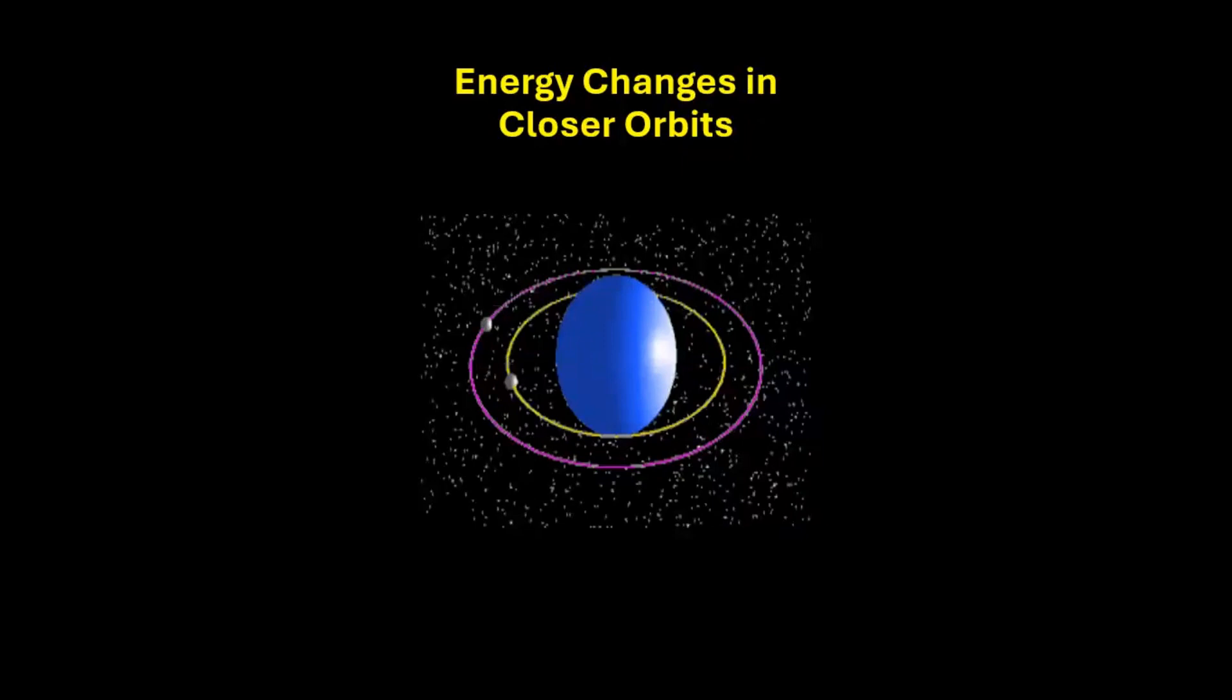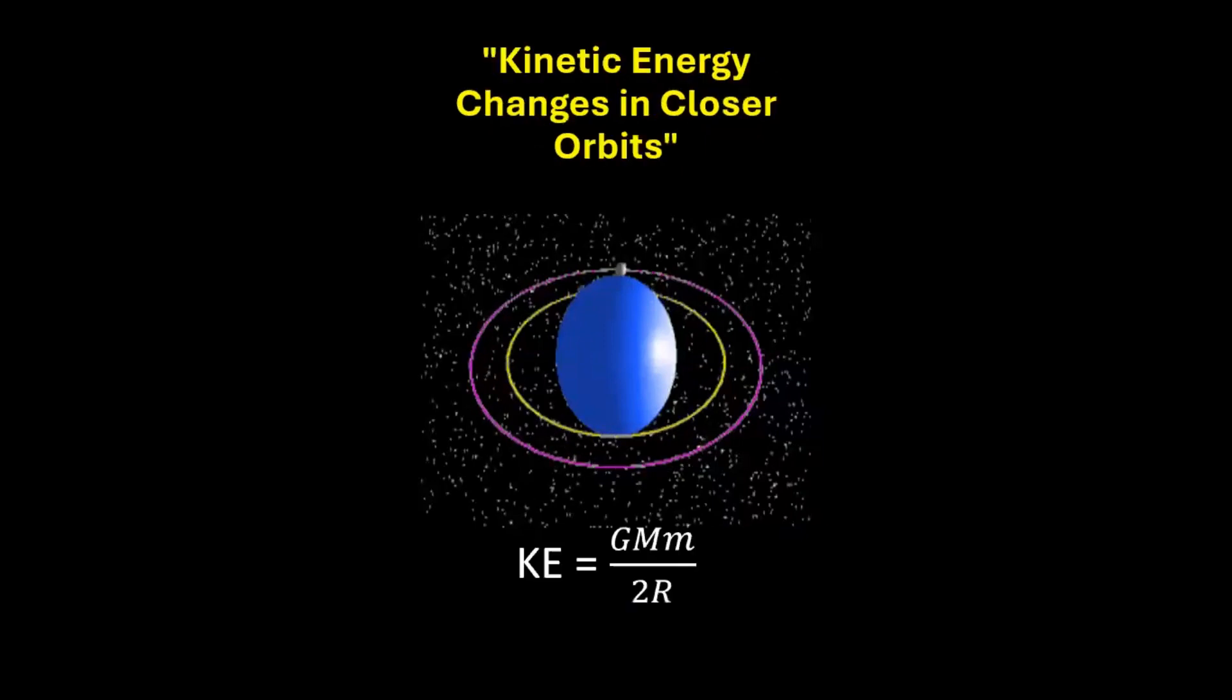When a satellite moves to an orbit closer to the Earth, the distance between the Earth and the satellite, which is R, reduces. This increases the kinetic energy. That means the satellite moves faster in an orbit closer to the Earth.